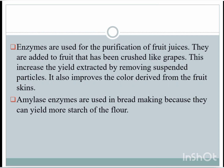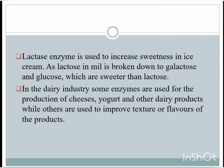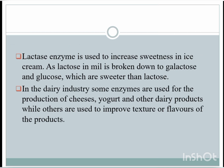Enzymes can be used to purify fruit juices — they are added to crushed fruit, increasing the yield extracted by removing suspended particles and improving color from the fruit skins. Amylase enzymes are used in bread making to break down more starch from the flour. Lactase enzyme increases sweetness in ice cream by breaking down lactose in milk into galactose and glucose, which are sweeter than lactose. In the dairy industry, enzymes are used for production of cheese, yogurt, and other dairy products, as well as to improve texture and flavor.